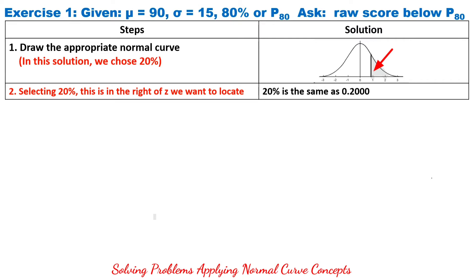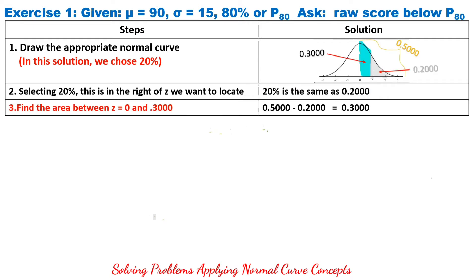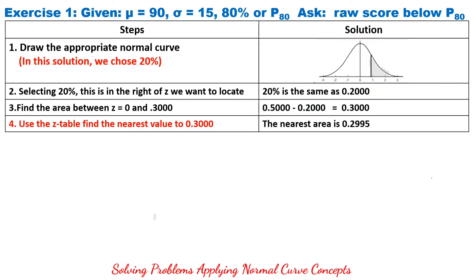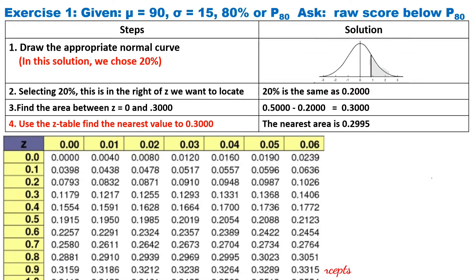We know that 20% is the same as 0.2000. Next, we will find the area between Z equals 0 and 0.3000. Where does 0.3000 come from? The half area to the right of the mean, which is 0, is 0.5000. The 20% is 0.2000. So, 0.5000 minus 0.2000 equals 0.3000.